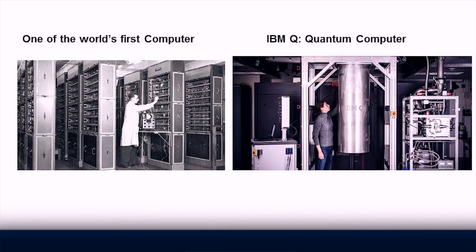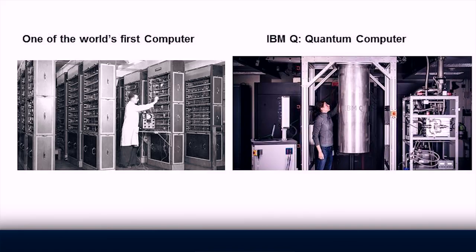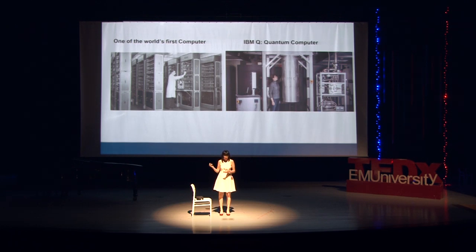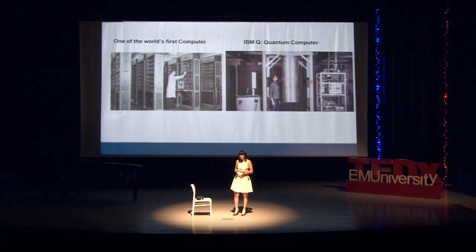You can see one of the first computers we had on the left — it was really big; one room was just one computer. Nowadays we use computers in our pockets — phones are computers. On the right you can see IBM quantum computers. Right now they are really big and look like a fridge, because they need to be kept extremely cold, even colder than outer space. The purpose is not having quantum computers in our pockets, but they are now thinking about using quantum computers together with AI — artificial intelligence.